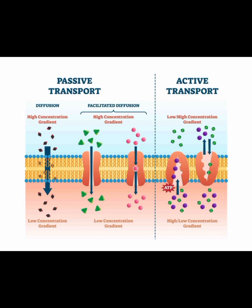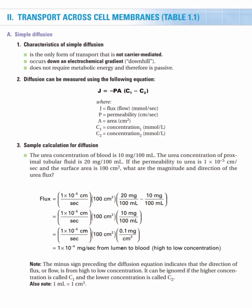Passive transport is the downhill movement of a substance — from a higher concentration to a low concentration — and it does not require any additional energy besides the kinetic motion of the molecules. Active transport, being an uphill movement from low to high concentration, requires an additional source of energy besides kinetic energy.